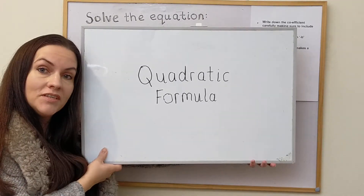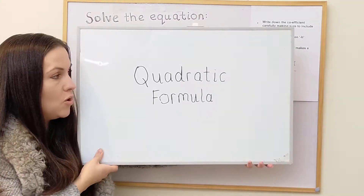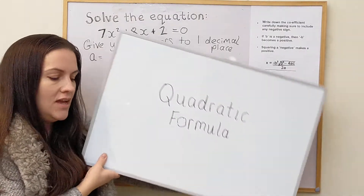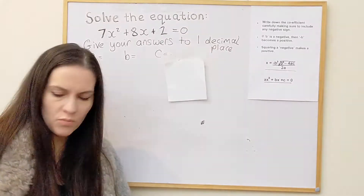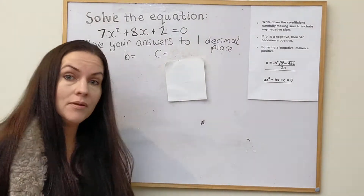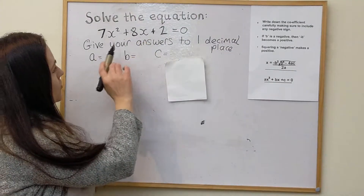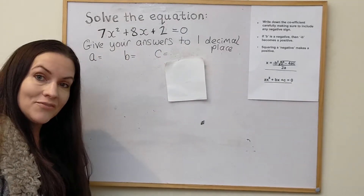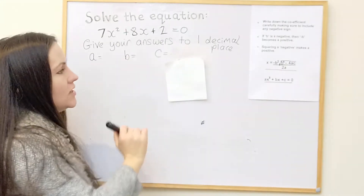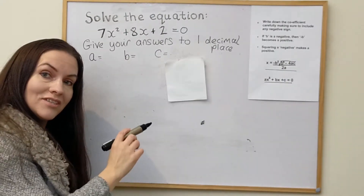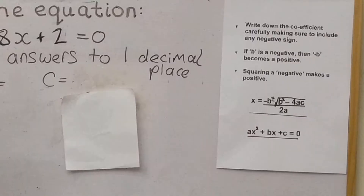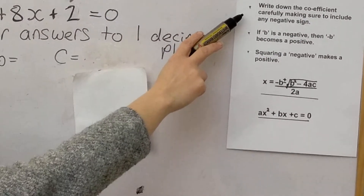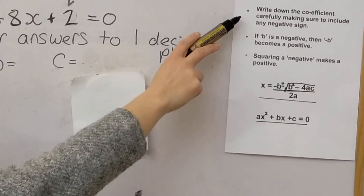Hi, and welcome to this week's video on the National 5 topic of the quadratic formula, as per viewer request. The three-step guide here basically advises us to write down the coefficients carefully — that's the a, b, and c values — making sure to include any negative sign.